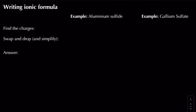Now let's look at writing ionic formulae. I've got aluminium sulphide and gallium sulphate. To find the formula you need to: first find the charges, then swap and drop them down, then simplify. For aluminium sulphide: aluminium is in group 3, so it's Al3+. Sulphide ends in '-ide' so it's just sulphur - S2 minus because it's in group 6. Drop and swap: the 2 comes down to aluminium, the 3 comes down to sulphur. The answer is Al2S3.